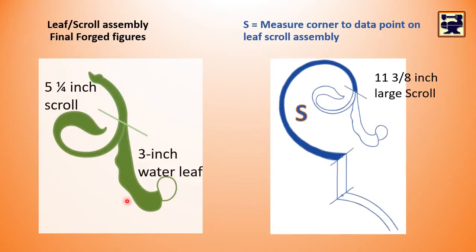In the last video we measured the final forged dimensions for the leaf scroll assembly and the total of the larger scroll piece. You may have different measurements on your drawing but they should be close to what you see here. You will be making four of these scrolls the same size using your measurements as a guide.